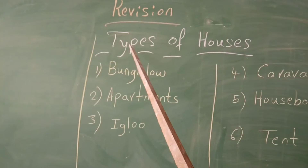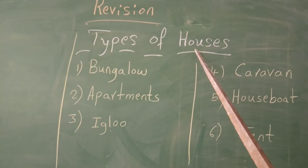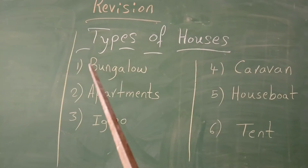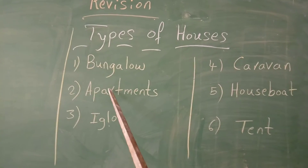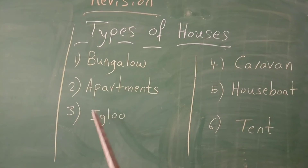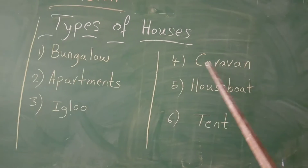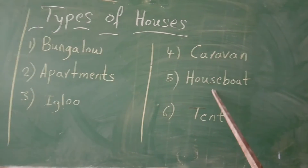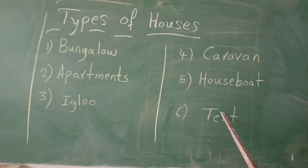See here once again. Types of houses: Bungalow, Apartment, Igloo, Karwan, Houseboat, Tank.